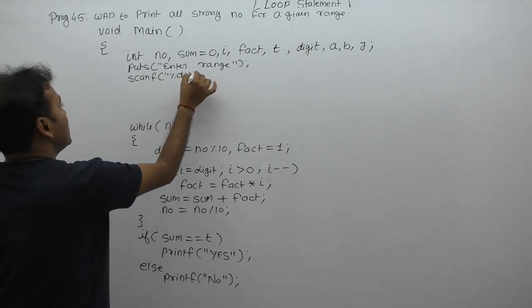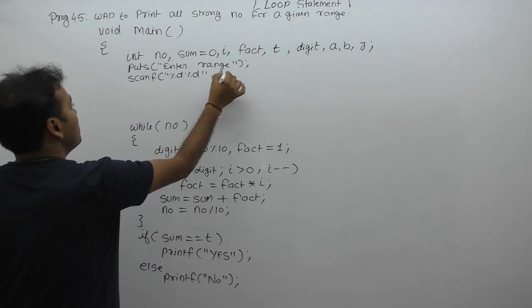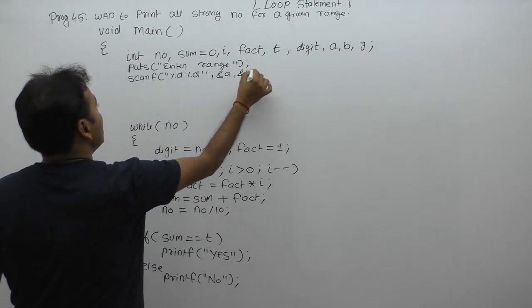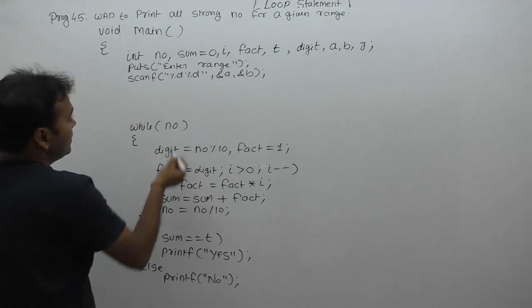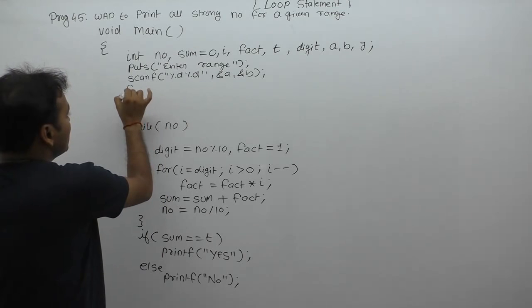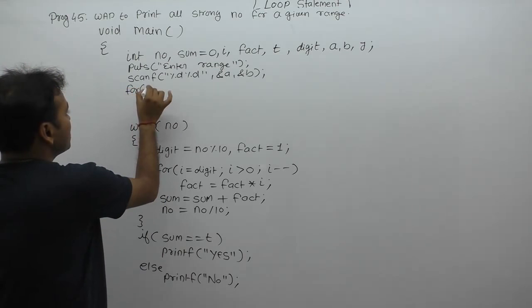Use scanf with percent d to read two values, value of a and value of b. Next, we use a for loop to manage the iterations. In this case, start from a up to b.